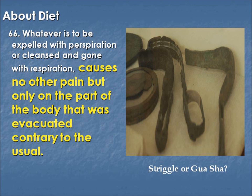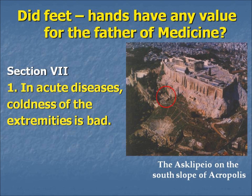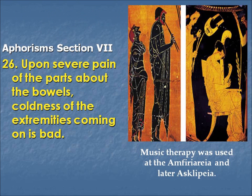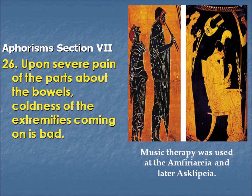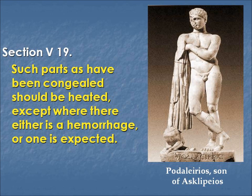Continuing in section seven, we will see if for Hippocrates the feet and hands had any value. He writes: in acute diseases, coldness of the extremities is bad. And: upon severe pain of the parts about the bowels, coldness of the extremities coming on is bad. So what if the extremities were cold — did he do anything about it? In section five: such parts as have been congealed should be heated, except where there is hemorrhage or one is expected. So we should try to heat these parts.